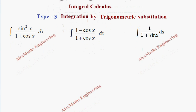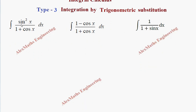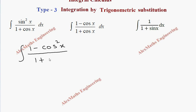For the first problem, we have sine squared x in the numerator. We rewrite this as 1 minus cos squared x, using the identity sine squared x plus cos squared x equals 1. So sine squared x is 1 minus cos squared x, and the denominator is 1 plus cos x, multiplied by dx.